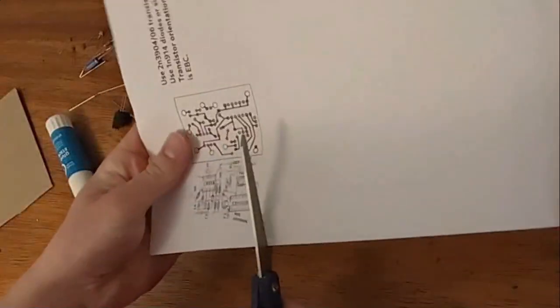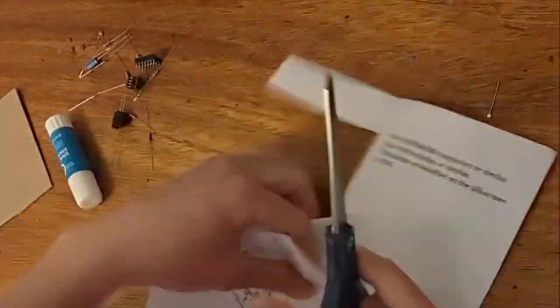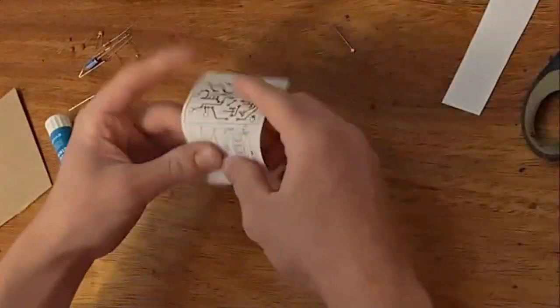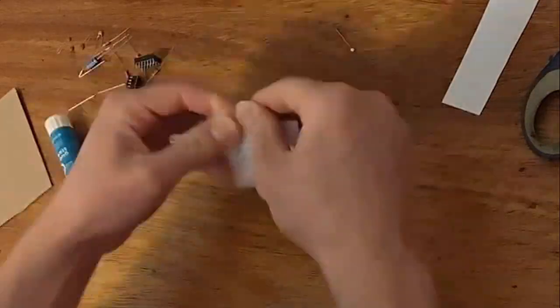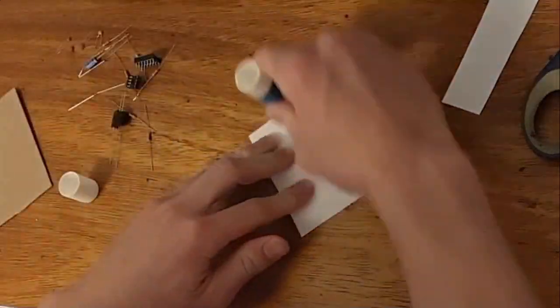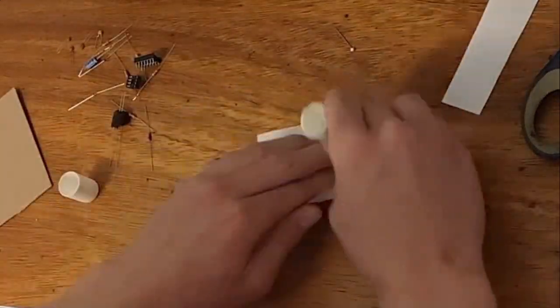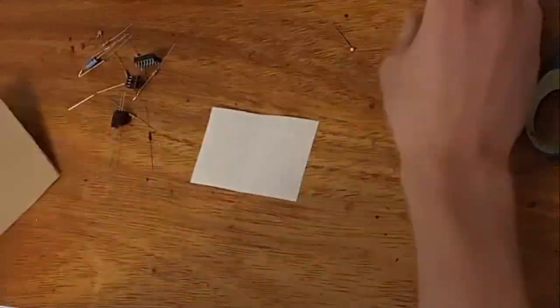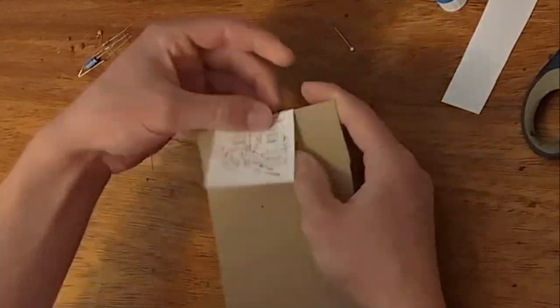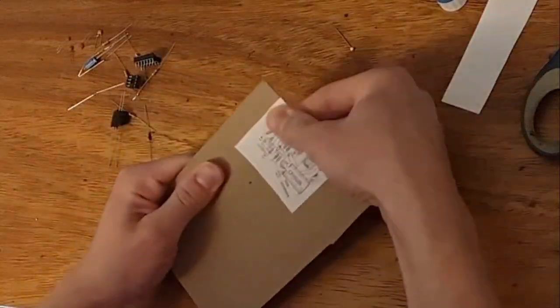Now for the construction. The PDF for the paper circuit will be linked under this video. But all you gotta do is print it out, glue it, fold it over, and then just start poking holes wherever necessary.